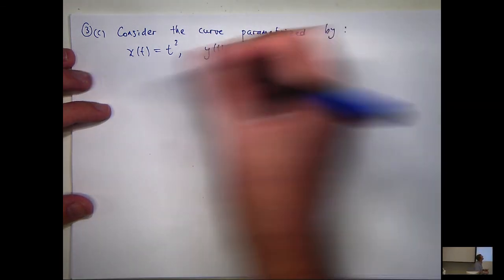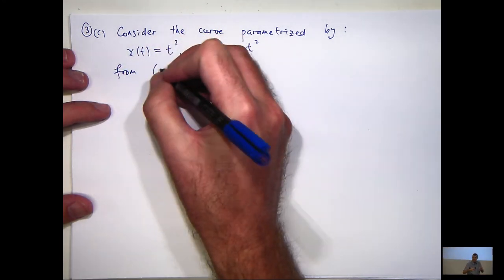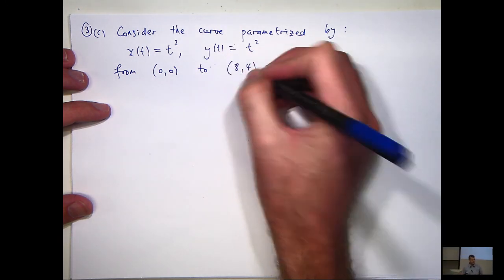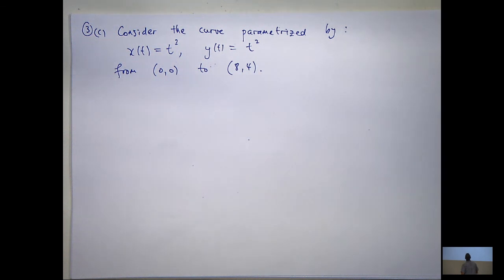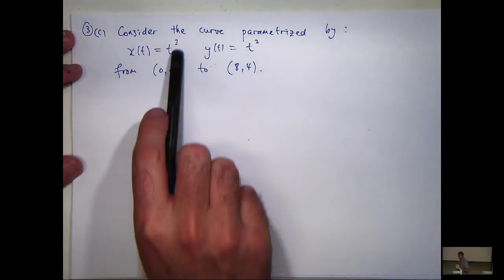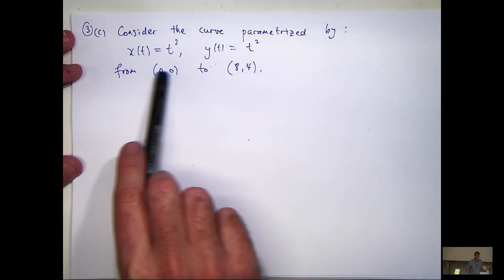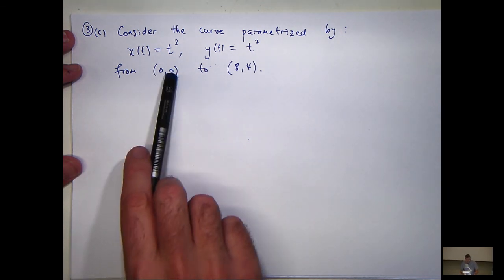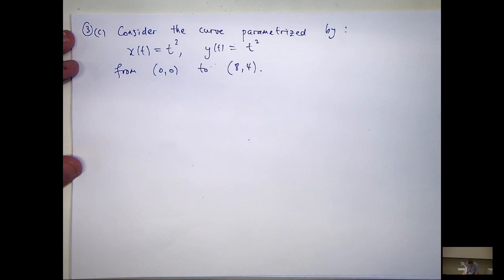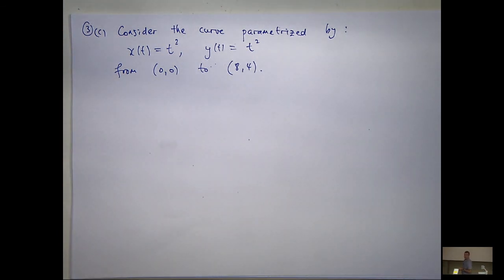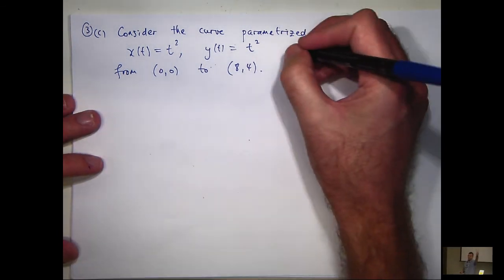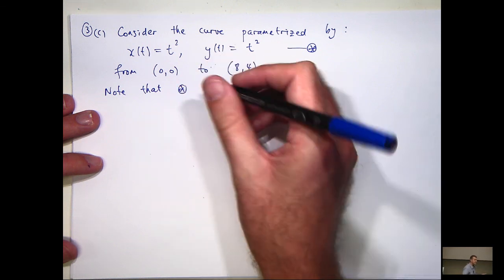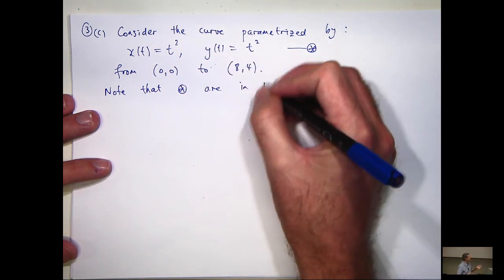Here is our basic parametric description. You can see the x-coordinate is a function of t and the y-coordinate is a function of t. We're going from one point to another in the plane — from x=0, y=0, to x=8, y=8. So that's the curve, described in parametric form.